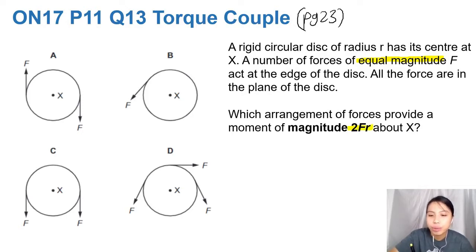Okay, so let's highlight some key points there. You have a circle, like a CD. You have a number of forces of equal magnitude acting at the edge of the disc. All the forces are in the plane of the disc. That's just FYI - we don't have 3D forces because that is quite much for A-Level physics.